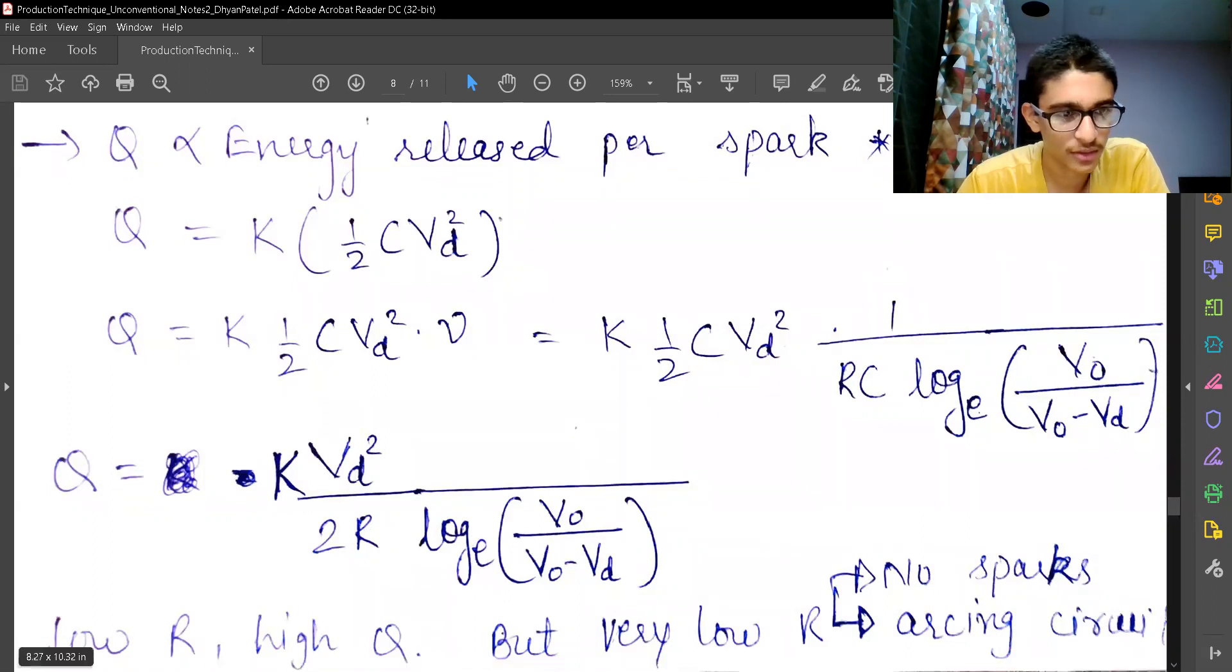So lower the value of my resistor, higher will be my volume removed. But very low value of resistance will result in no spark and it can also lead to arcing circuit. So we want a sparking circuit, but it can lead to arcing circuit, so that is not desirable.